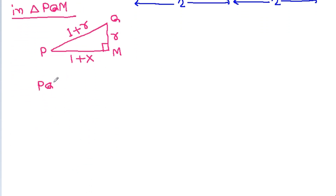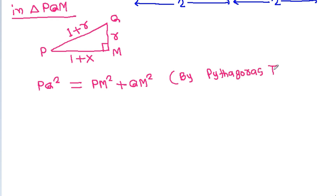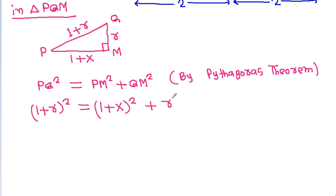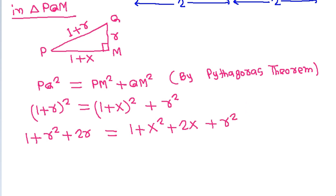By Pythagoras theorem, PQ² equals PM² plus QM². So (1+R)² equals (1+x)² plus R². Expanding: 1 plus R² plus 2R equals 1 plus x² plus 2x plus R². R² cancels and 1 cancels, so 2R equals x² plus 2x.